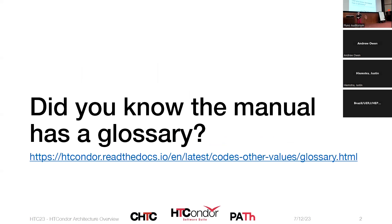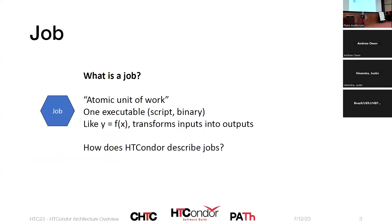Where are these terms coming from? Did you know the manual has a glossary, curated by Greg Thain? You can click on this link, and we're going to go through most of the terms in that list with a couple of diagrams. We'll start with a job: what is a job? It's a unit of work — the thing you want to run, the executable, the script, the binary. As a mathematician, I think of it as a function transforming inputs to outputs, x's to y's.